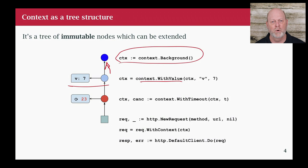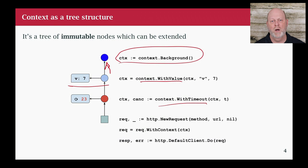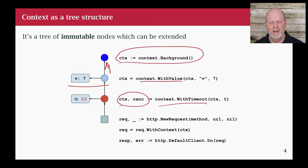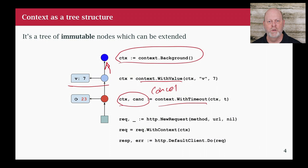To put a timeout, I call context.WithTimeout, pass in the parent context and the timeout value, and it gives me a new context. In the case of WithTimeout and a couple other functions, it actually gives me two things: the new context and a cancel function. The most common thing we do is immediately defer calling cancel. So let me show you how we use a context - I'm going to make an HTTP request, take the context where I've added a timeout, and put it into my HTTP request before doing the request.